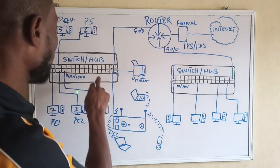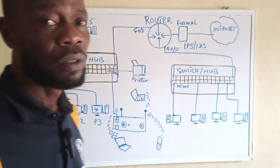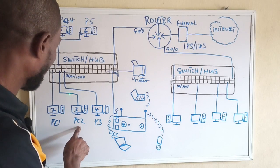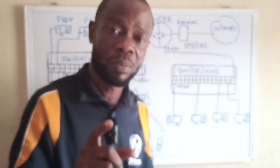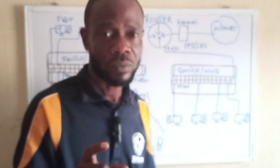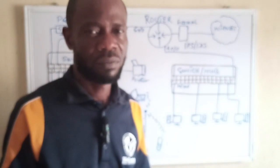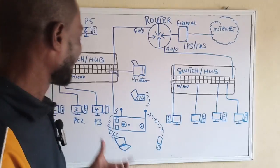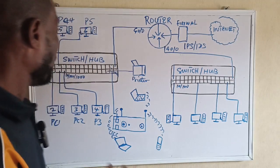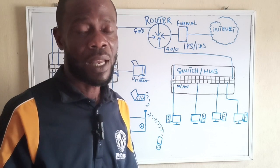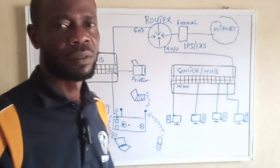The switch came to the rescue. Every port on a switch is in its own collision domain, meaning when PC1 wants to communicate with PC2, it goes straight to PC2, and PC3, PC4, and PC5 will not see that communication or get a copy of that frame. Switches operate using MAC addresses — Media Access Control. When data comes to a switch, it is converted into a frame. However, all computers connected to a switch are still in one broadcast domain.